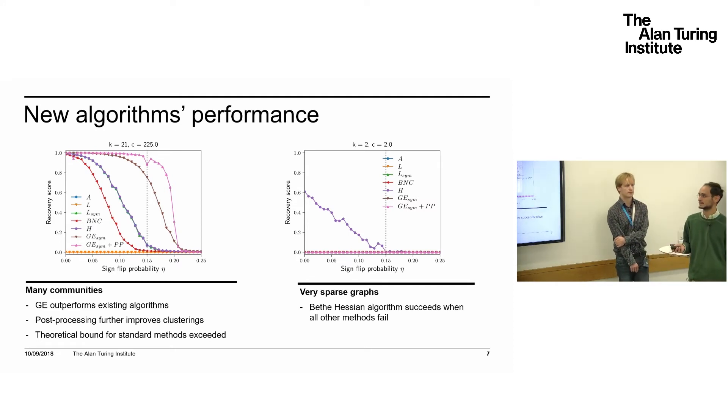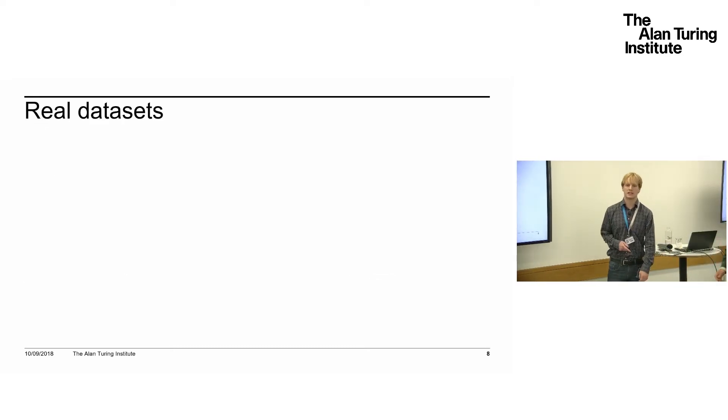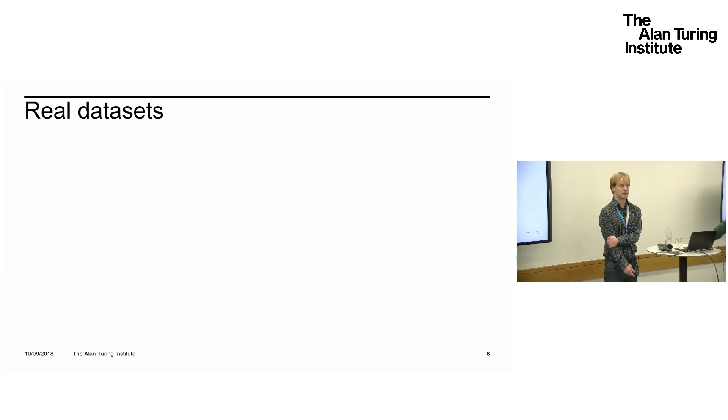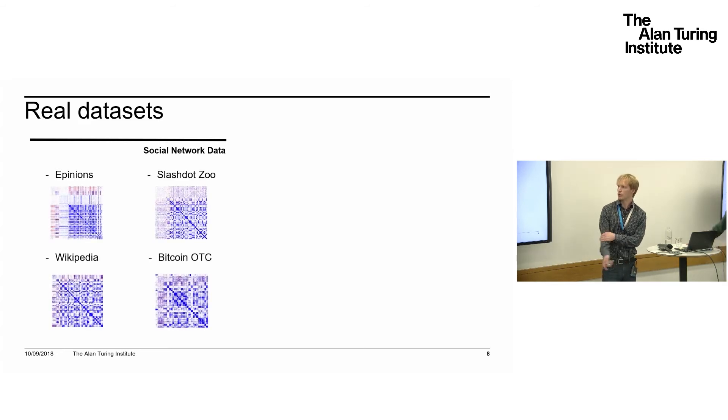We then tested real datasets. There are two natural types of real data for these algorithms. First, social networks with negative edges. For example, the Wikipedia dataset has people running to be an admin of Wikipedia, and they can vote yes or no to each other as to whether they want that person to be admin, giving you positive and negative edges. People have tried to cluster these graphs with limited success because they're quite difficult—generally you have some huge area that's very sparse with basically no clustering structure. But as you can see from these pictures, we can find some structure. Blue is positive edges, red is negative edges. Blue squares along the diagonal mean a cluster where nodes are positively related with each other.